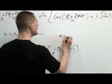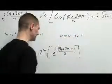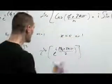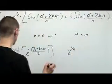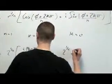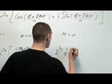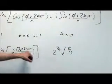Where k is going to be 0 or 1. When k is 0, we're going to end up with 2 to the 1 fourth, e to the i pi over 8, right? That's k is 0. It killed off this.